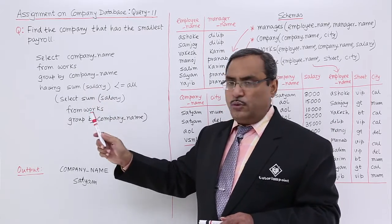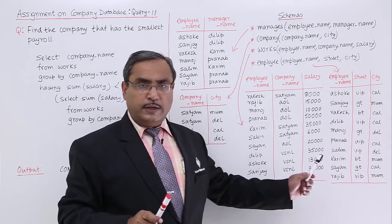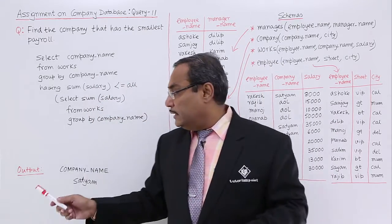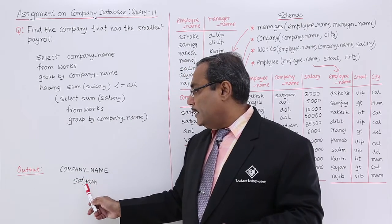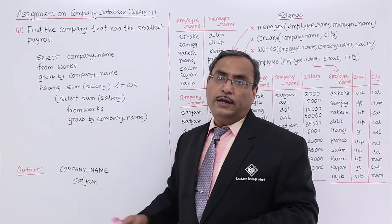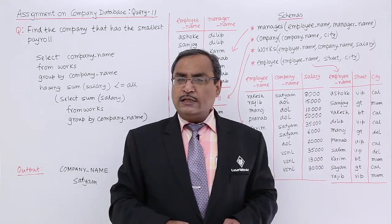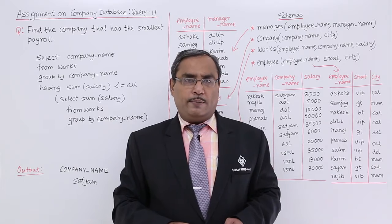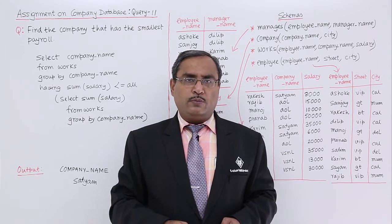If you execute this query with this instance of the database, you will get the output: company name will be obtained as Shottam. In this way the query can be written. Thanks for watching this video.